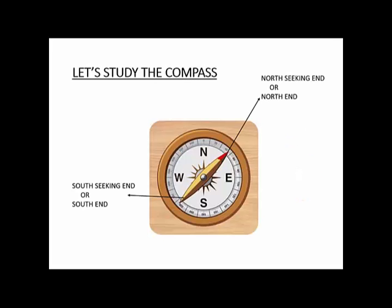This is a compass — this is how you see a compass. There is a red pointer here. Understand that this red pointer of the compass will always point towards north — it will always seek north and show you in which direction north is. It has got a bar magnet inside, that's why the red pointer will always show you north.